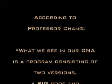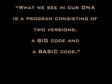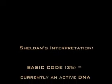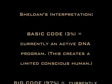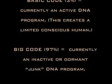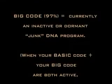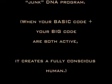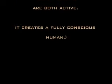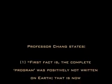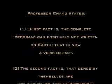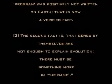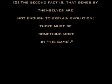According to Professor Chang, what we see in our DNA is a program consisting of two versions: a big code and a basic code. The basic code is currently an active DNA program that creates a limited conscious human. The big code is currently an inactive or dormant DNA program. When both the basic code and the big code are active, it creates a fully conscious human. Professor Chang states that the complete program was positively not written on earth — that is now a verified fact — and that genes by themselves are not enough to explain evolution; there must be something more.